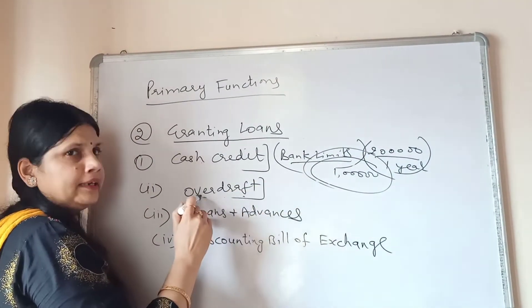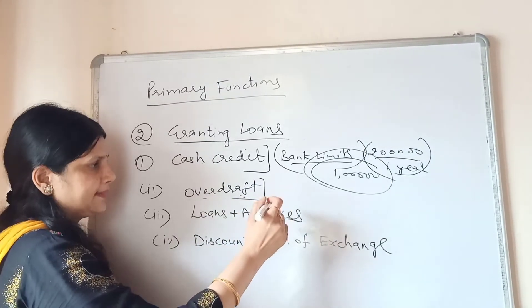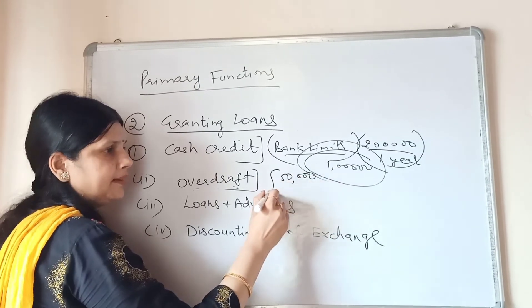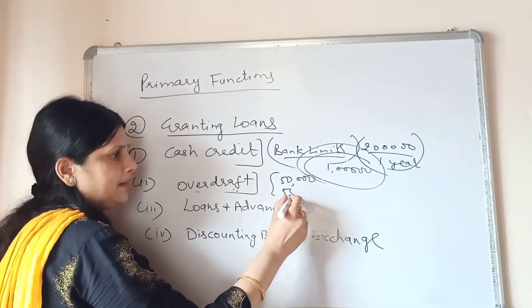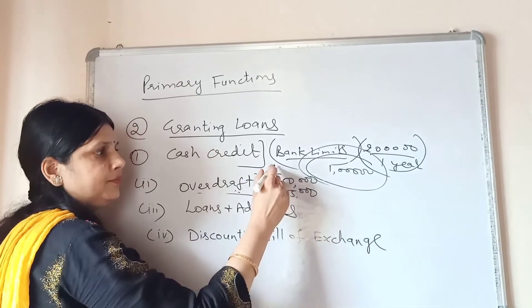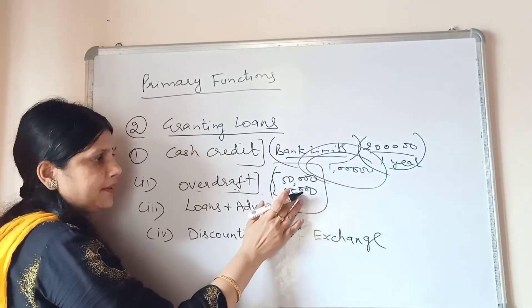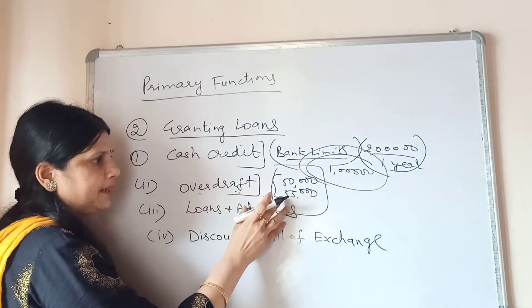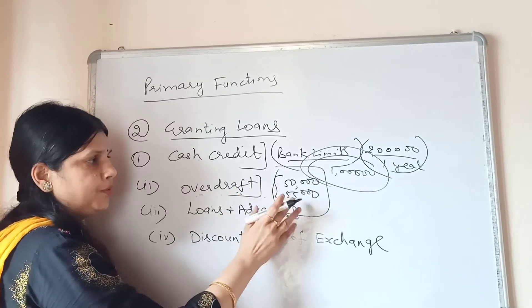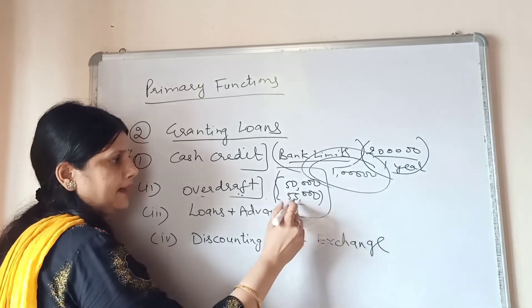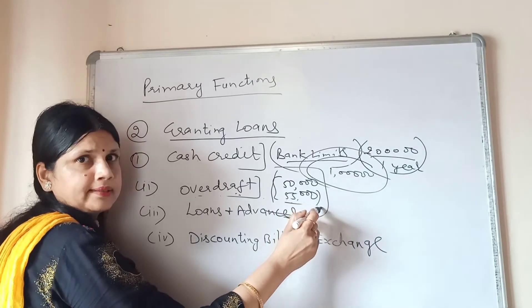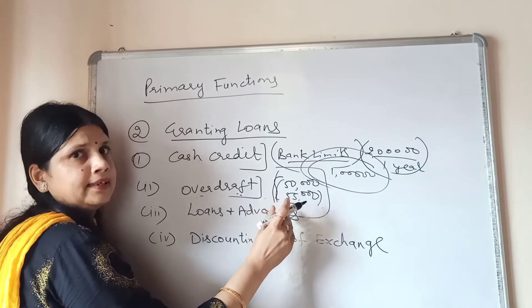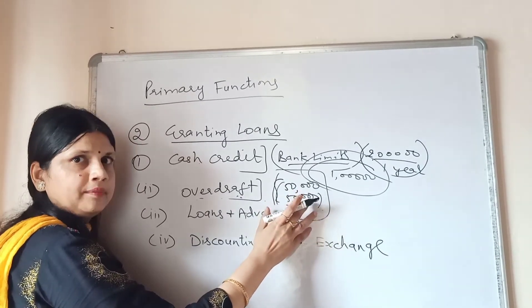The second form is overdraft. The bank also provides overdraft facilities to clients. For example, if your account has 50,000 rupees and you need 55,000, the bank allows you to withdraw 55,000. This facility is available only on current accounts held by businessmen, and it is given only to loyal customers. This is considered the easiest method of getting a loan.